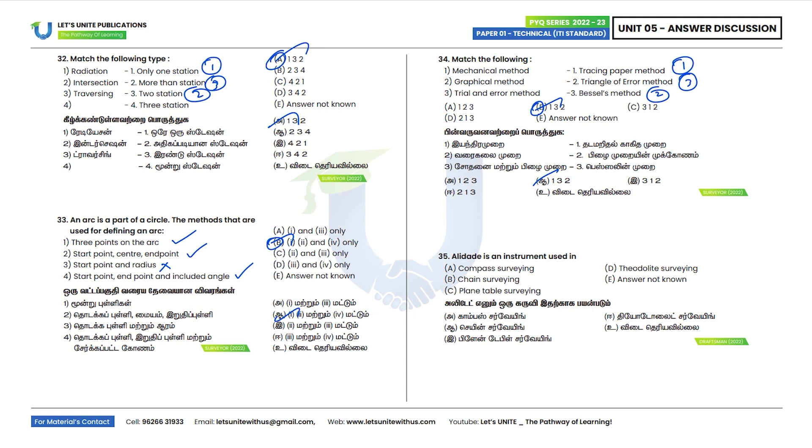Thirty-fifth question: An alidade is an instrument used in plane table surveying. Option C is the correct answer.